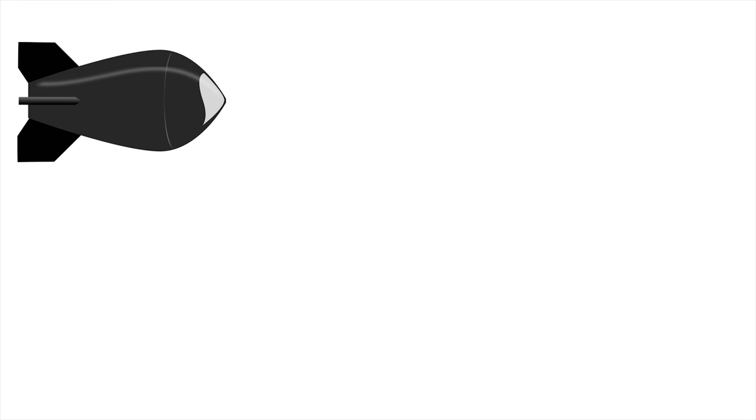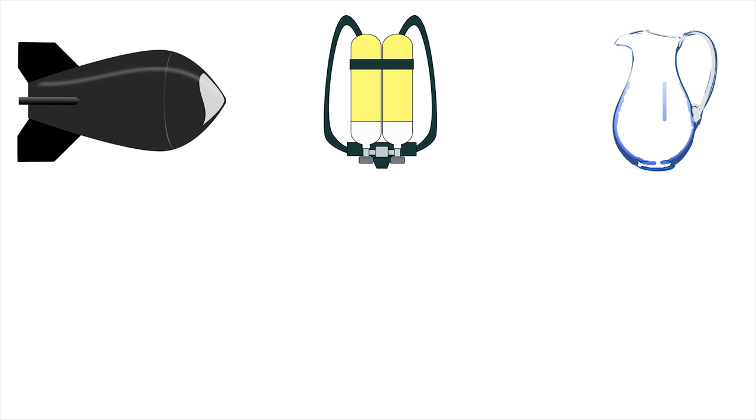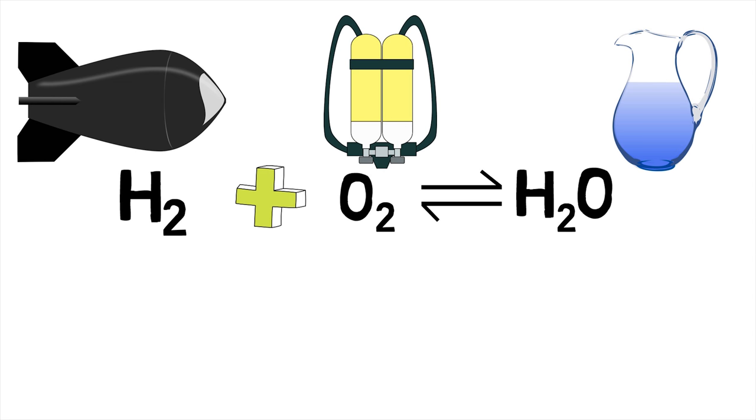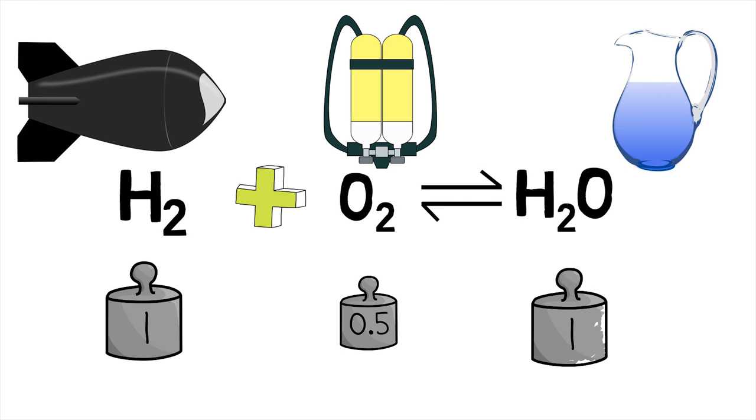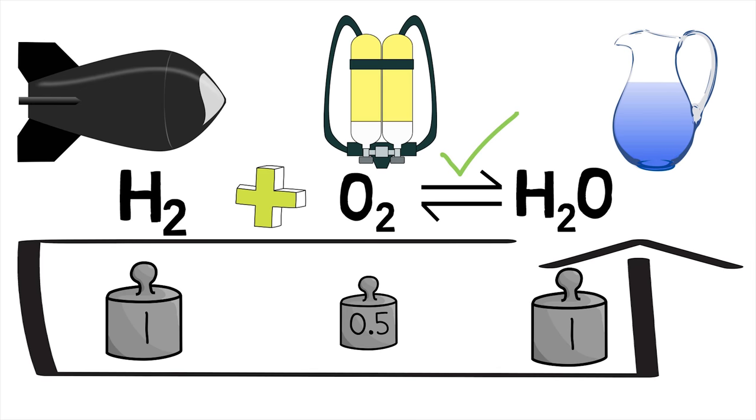For example, the reaction between the reactants hydrogen and oxygen to form the product water can be expressed as H2 plus half O2 in equilibrium with H2O. This equation indicates that one mole of hydrogen and half a mole of oxygen combine to form one mole of water. The reaction can also proceed in the reverse direction and hence the equilibrium sign. The coefficients 1, half and 1 are called stoichiometric coefficients.